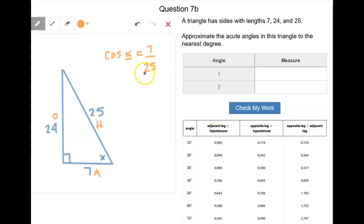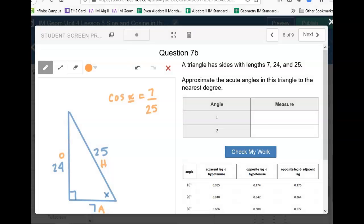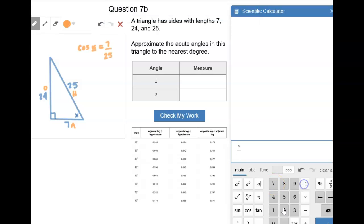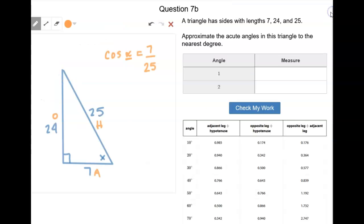So if I take 7 divided by 25, it's exactly 0.28. So we're going to look in this adjacent divided by hypotenuse column, and we're going to look for 0.28.